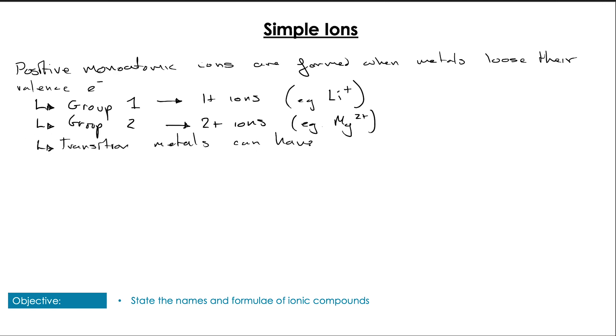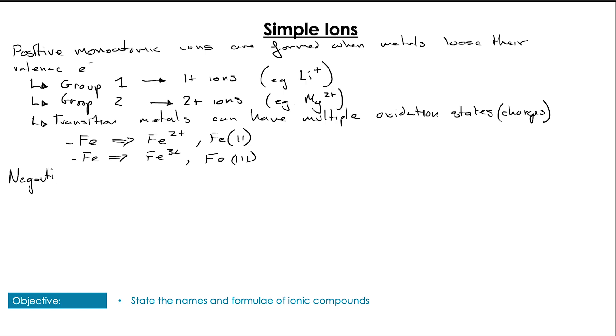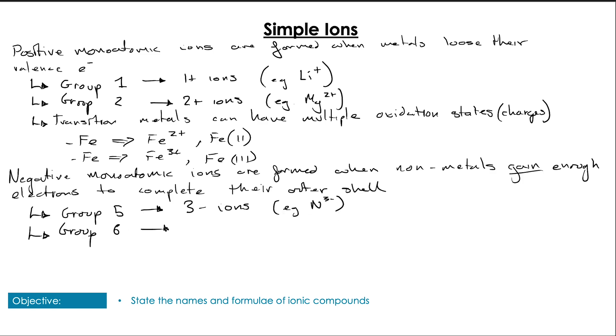Now the transition metals have variable oxidation states. For example, iron can form +2 or +3 charge, and we usually write that with the 2 or 3 in Roman numerals in brackets. Negative monoatomic ions are formed when nonmetals gain electrons, so they have a negative charge. These are also related to the group they're in because they want to complete their outer shell. See the octet rule from earlier in the unit. Group 5 nonmetals form 3- ions, for example nitrogen 3-, group 6 we get 2- ions like O2-.